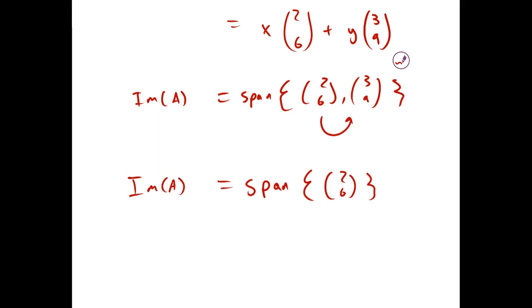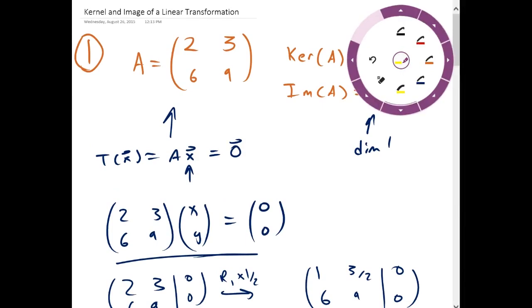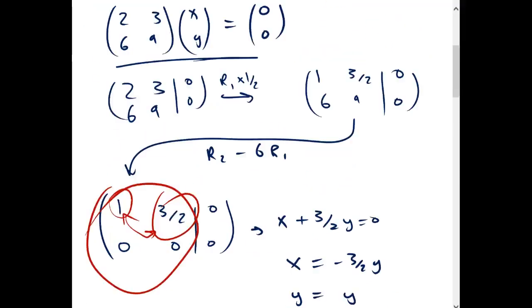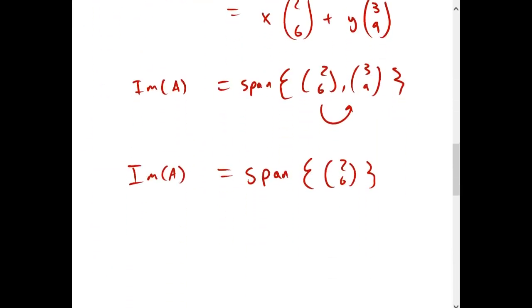We know that this has to be the case because we found by the rank-nullity theorem that the image has a dimension of 1. Now, if we wanted the basis for the image, we'll call it beta sub i. We'll just say the vector (2, 6).